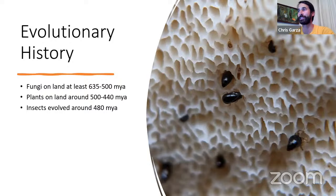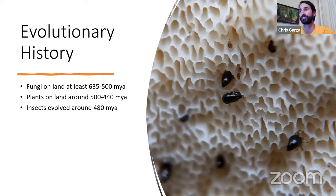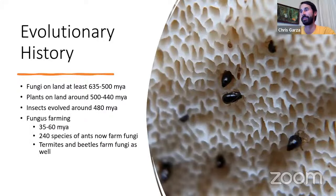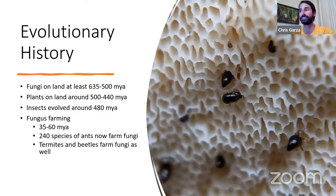Insects evolved around 480 million years ago. As they came onto land, there was probably a lot more fungus than plants, so we can assume insects almost immediately started forming relationships with fungi — whether eating fungi or developing more complex relationships as early as 400 million years ago. Fungus farming specifically started 35 to 60 million years ago, and now we have at least 240 species of ants that farm fungi. Termites and beetles farm fungi as well. Entomopathogenic fungi — the zombie ant fungi — existed at least 48 million years ago.